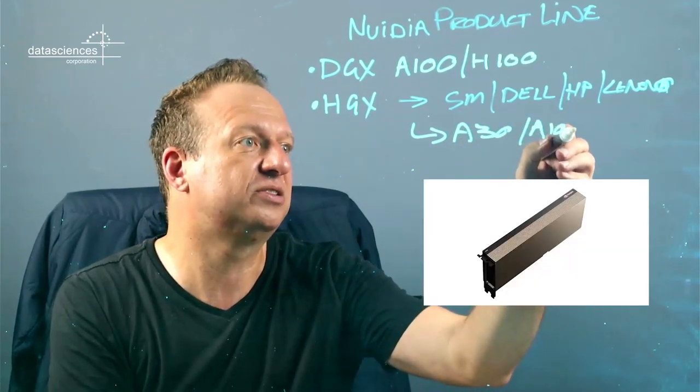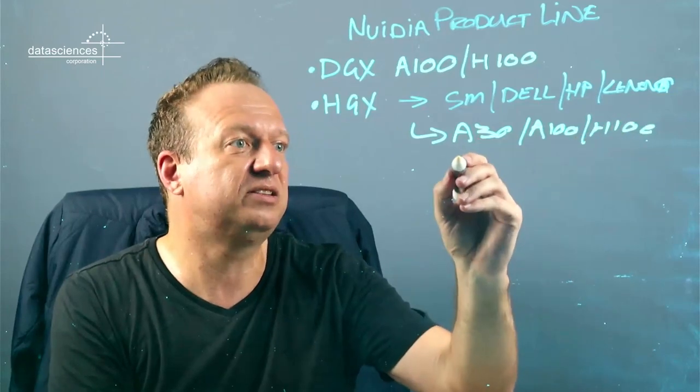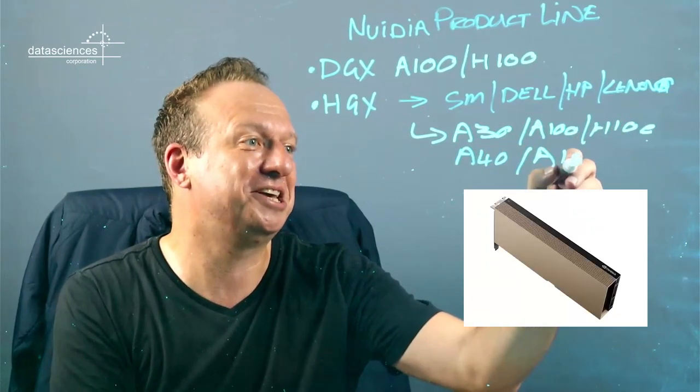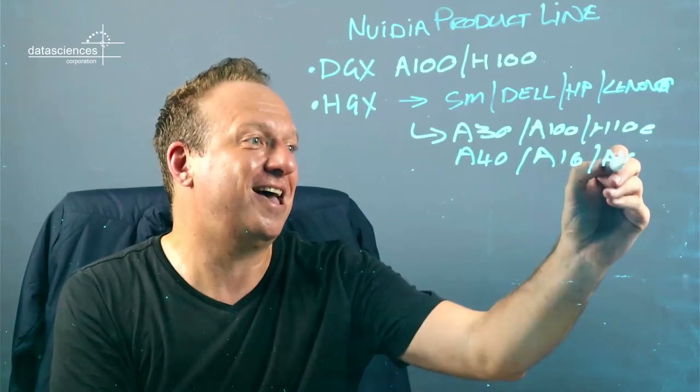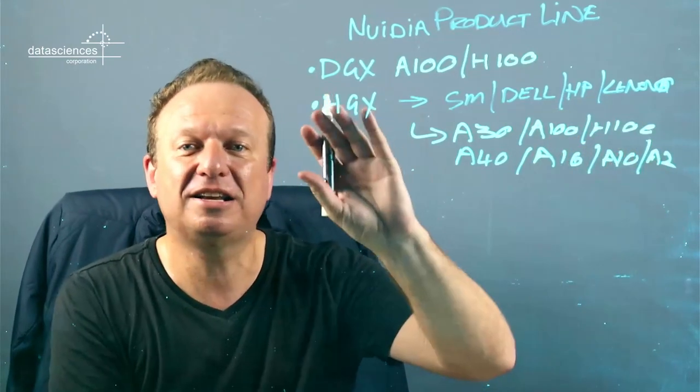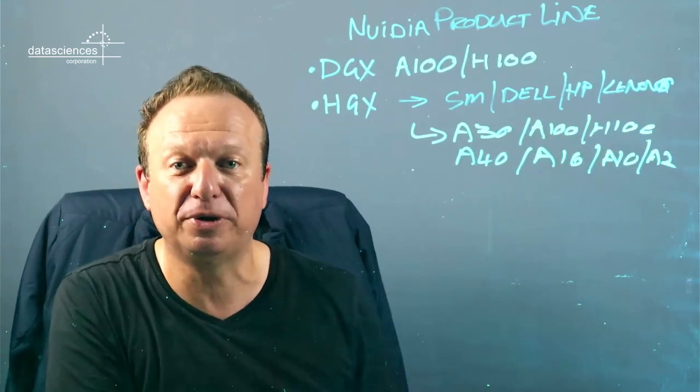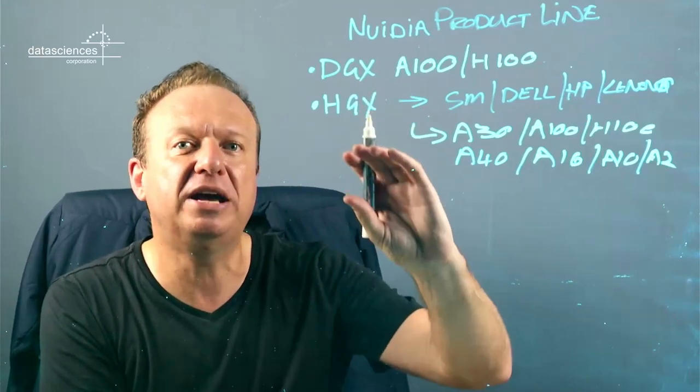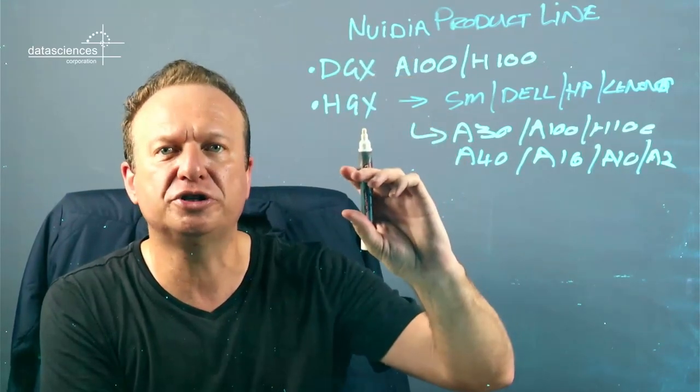They can build using the A100 or the H100 or in addition to that maybe some of the other cards like the A30, the A100s, the H100s, the A30s, the A40 and also the A16, A10 and the A2. Basically all of the range of analytical GPUs that NVIDIA has can be built into an HGX, and that's really the big difference between the two solutions.